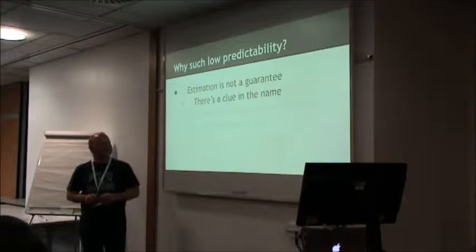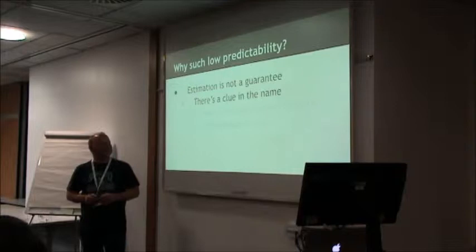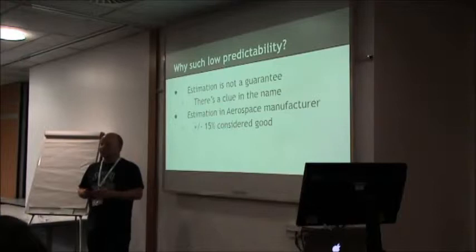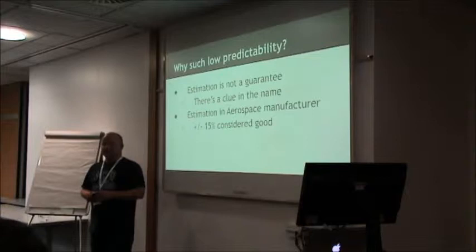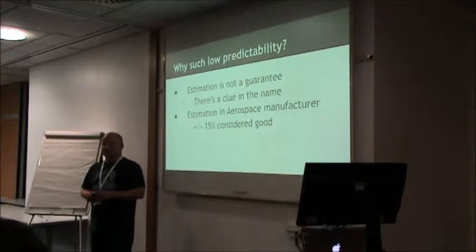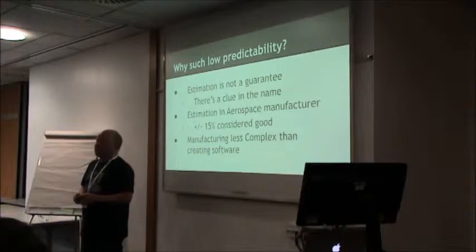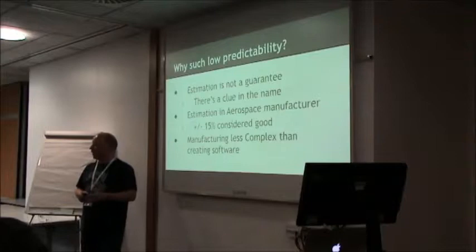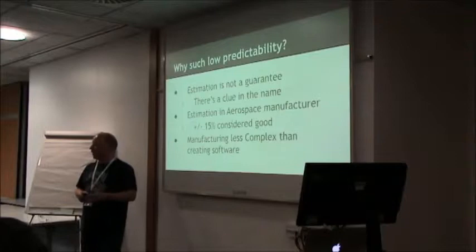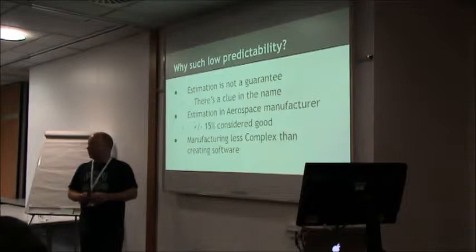Also, an estimate is not a guarantee, although it's taken to be in some cases. In aerospace, plus or minus 15% is considered to be good — and plus or minus 15% is a lot of money when you're talking about aerospace components and projects. I think software is more complex than manufacturing widgets — once you've got your widget machine working you can just turn them out, but that would be complicated rather than complex. So I think we can expect less predictability in software, and that would be acceptable.